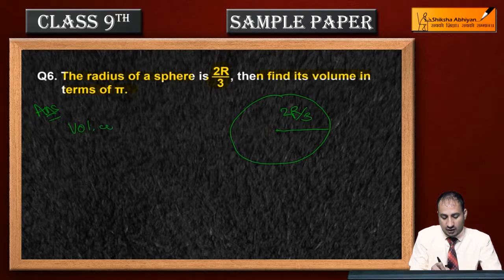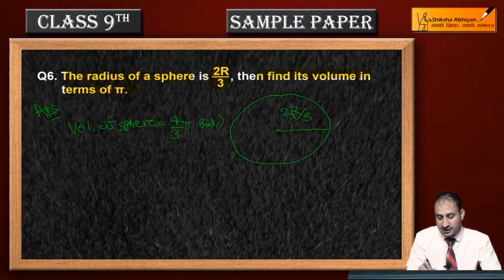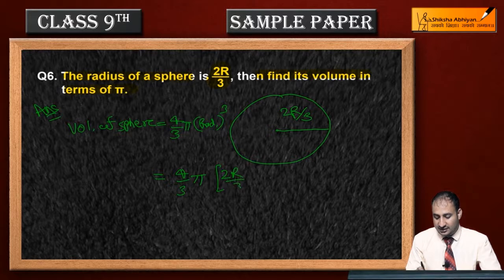Since aap jante hain ke volume of sphere kya hota hai? Volume of sphere hota hai 4 by 3 pi. Yahaan par main radius dikha deta hoon, radius q. Therefore yahaan kya ho jayega 4 by 3 pi. Radius ki jagah kya rakhenge? 2R by 3 ka cube.